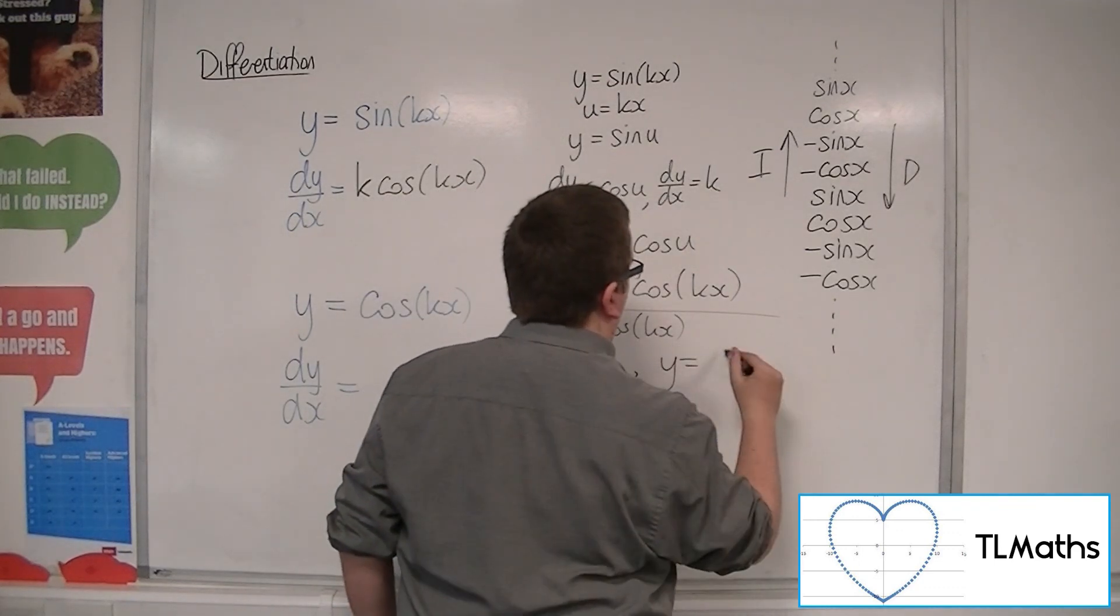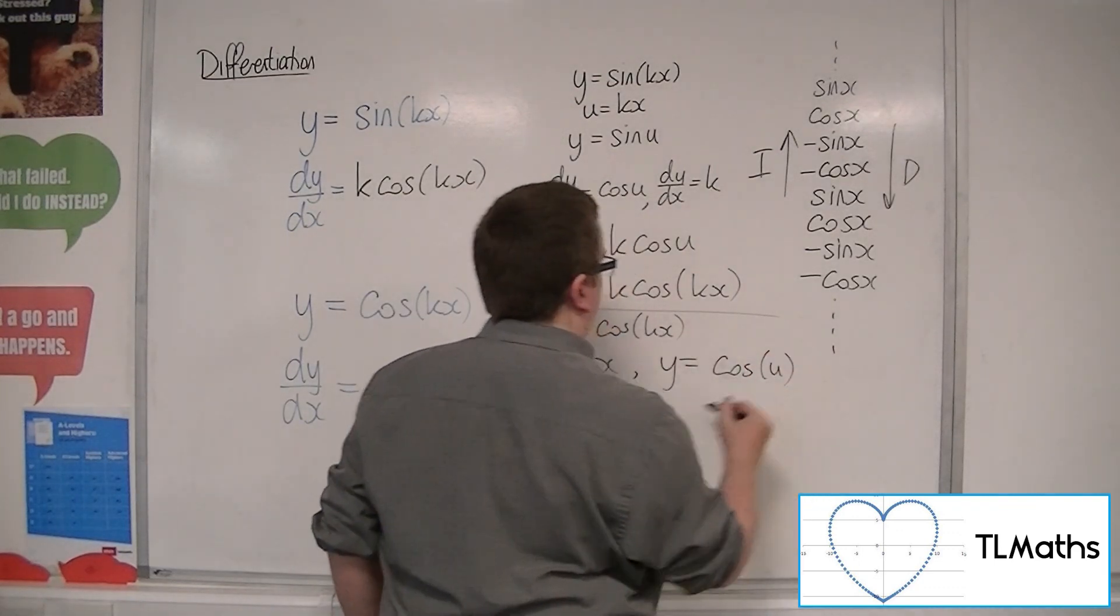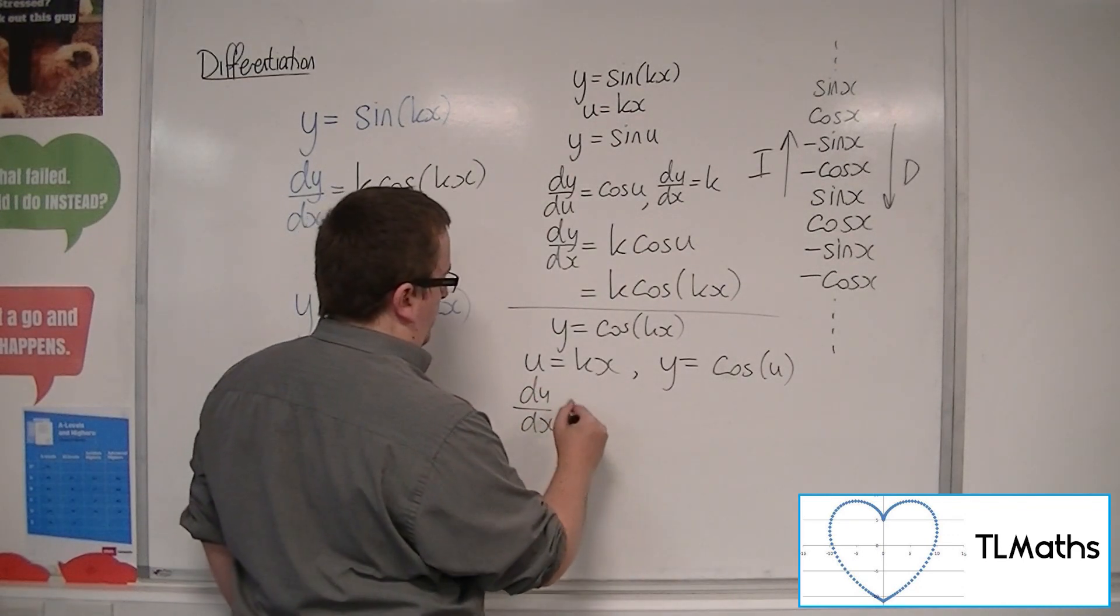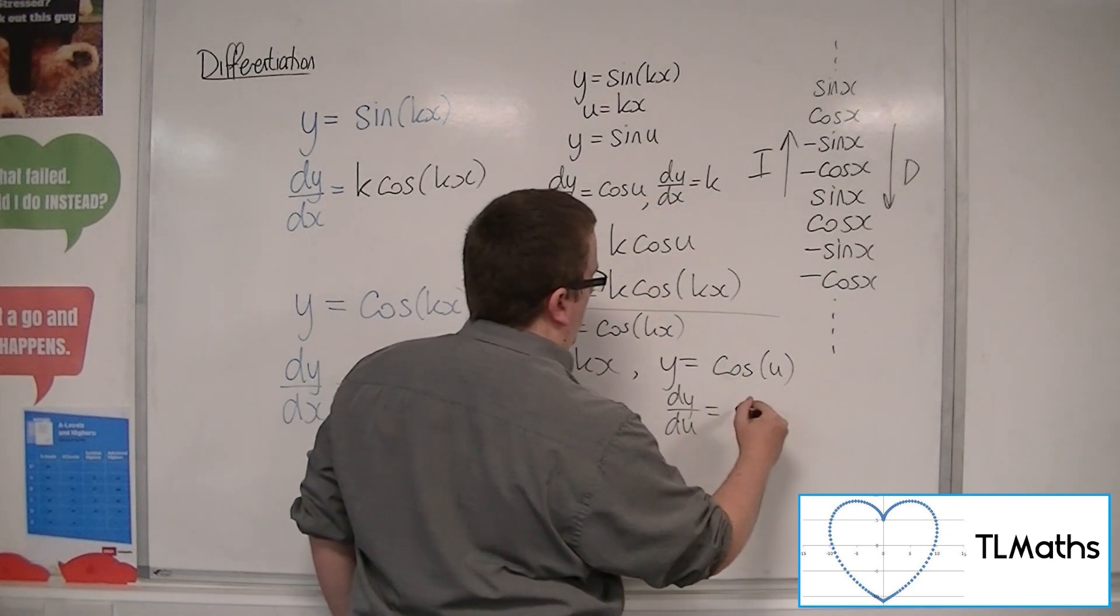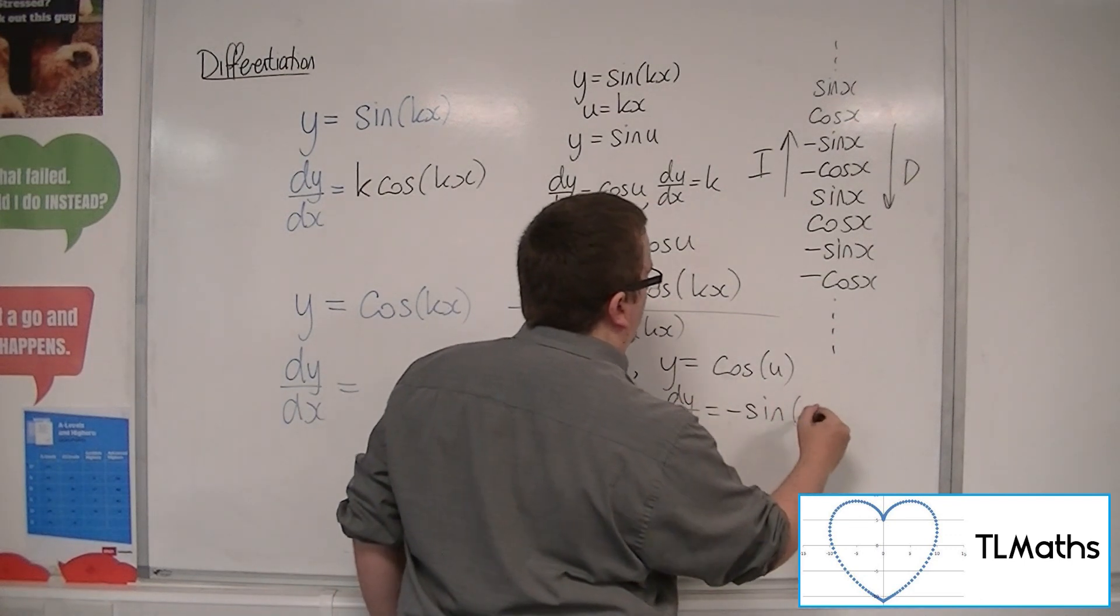So du by dx is equal to k. Dy by du is minus sine of u.